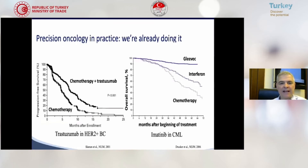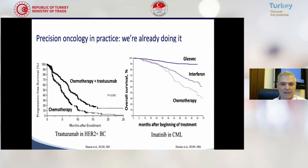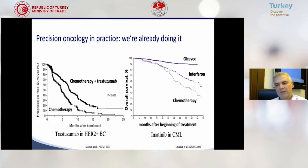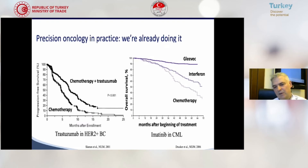Precision oncology has changed the survival of cancer patients. For example, with chemotherapy alone, the survival of metastatic breast cancer was around 12 to 15 months. With chemotherapy plus trastuzumab, a smart drug, survival has now increased to more than two years. Another example is Gleevec: with chemotherapy, CML was a deadly disease, but now with Gleevec, a smart drug, even cure is possible in chronic myelogenous leukemia.